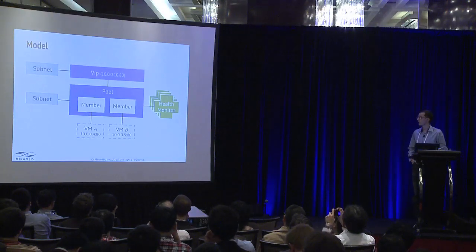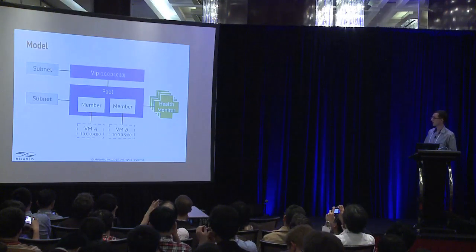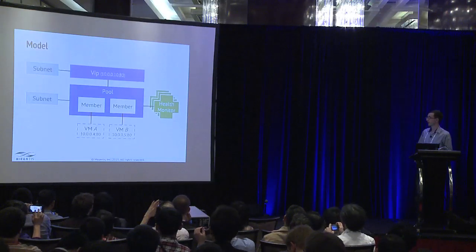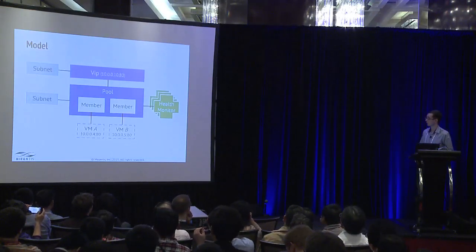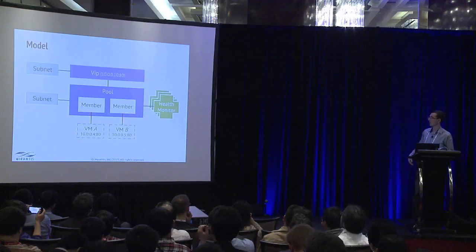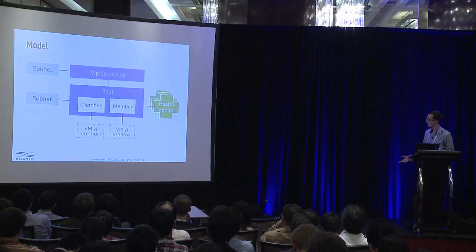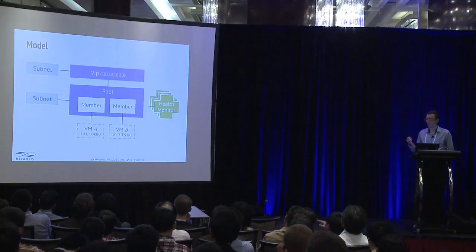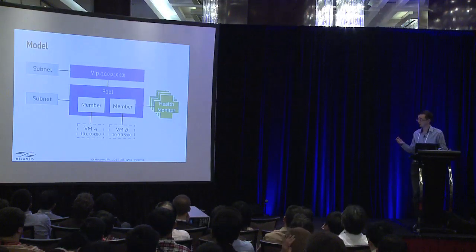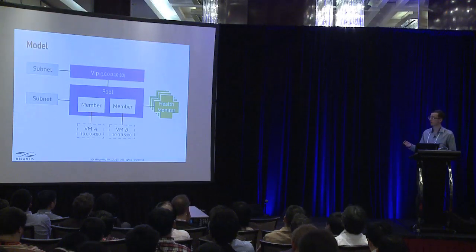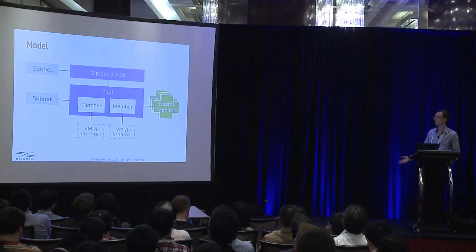That is how the data model looked in Grizzly. We have a few major objects: VIP, pool, member, and health monitor. One of the major limitations of this model is that you can only have one VIP for the pool and only one pool for the VIP.